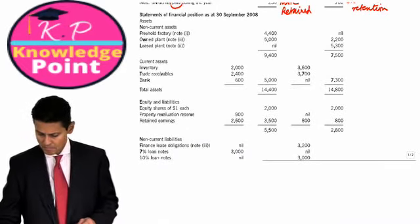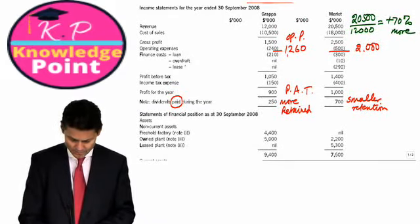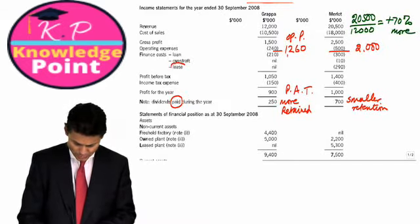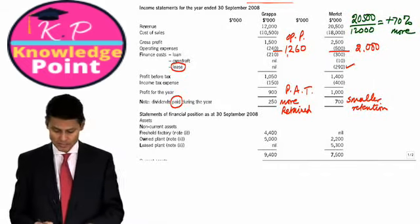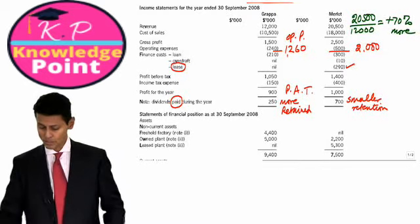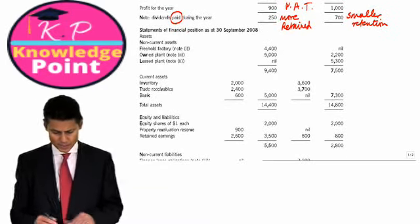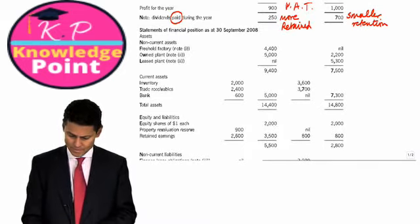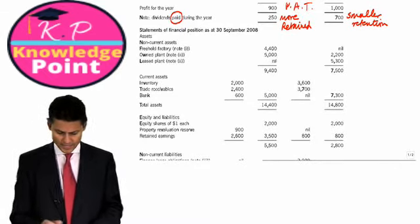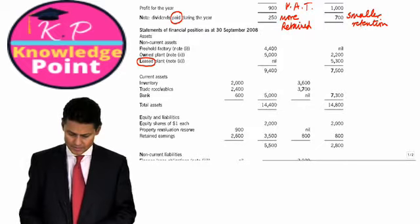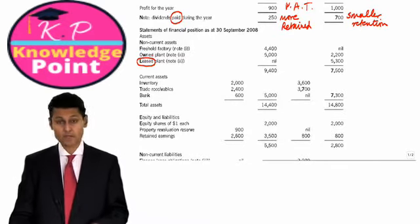One other thing I must not miss as I carefully read the question. This word lease is interesting, isn't it? Sounds like one company has a big leasing expense interest or finance cost, the other one has nil. Interesting that you have freehold factory on the left-hand side, nothing on the right, owned plant. And then again, you have that word leased plant. So you get the impression that the company on the right, Merlot, is leasing plant, whereas the company on the left doesn't seem to have anything on lease.